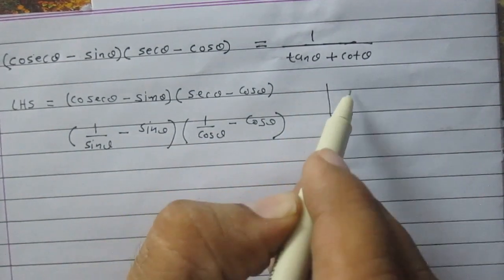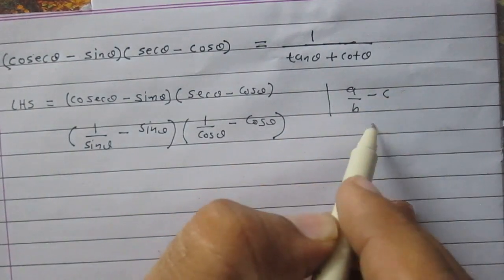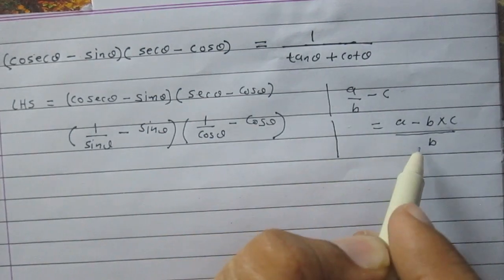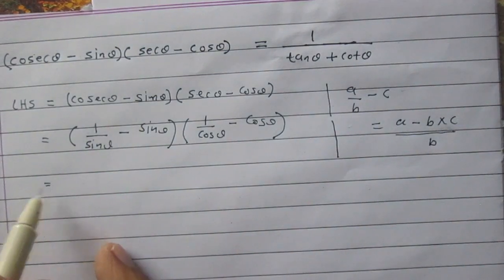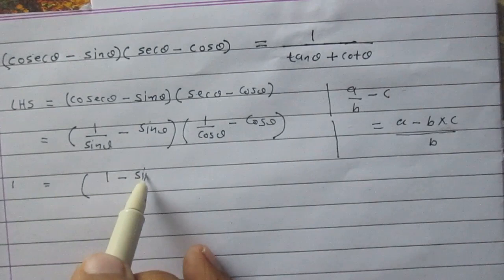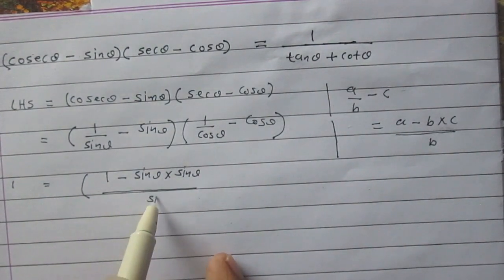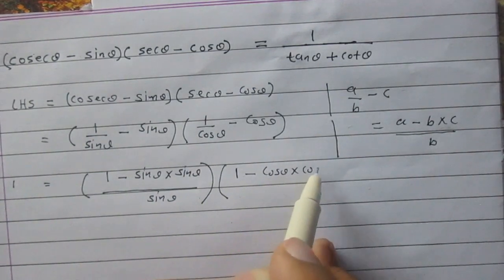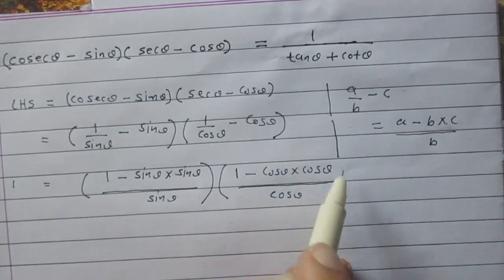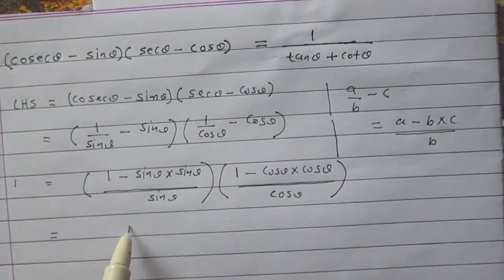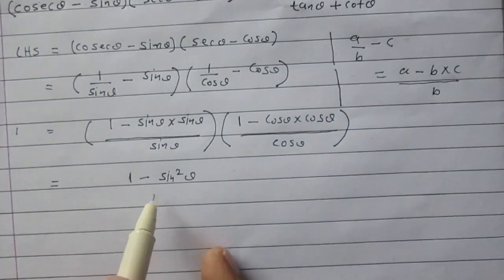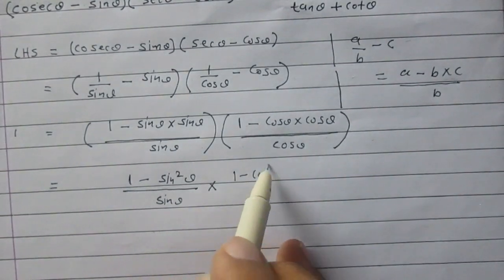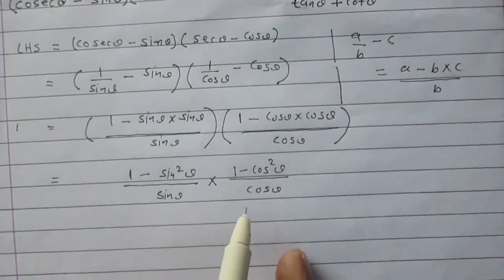We know that a/b minus c equals (a minus bc) / b. Using this relation, we can write the left-hand side as (1 minus sin²θ) / sin θ, multiplied by (1 minus cos²θ) / cos θ.